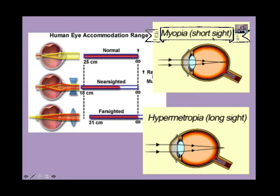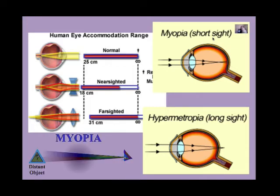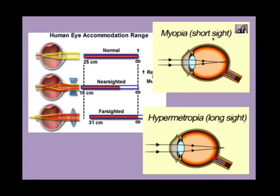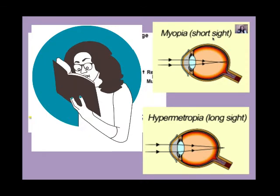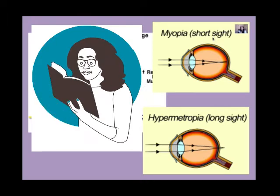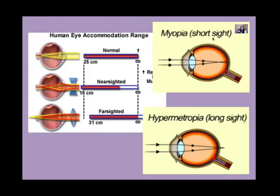If your friend has myopia — short-sightedness — what challenge is she facing? A person with myopia will be able to see close objects very clearly, but when it comes to distant objects, those will appear very blurred. So if your friend Sibongile is reading a book that's very close to her eye, she is perfectly fine — she can read it very clearly. But if Sibongile has to look at something far away in the distance, it's going to be a problem.